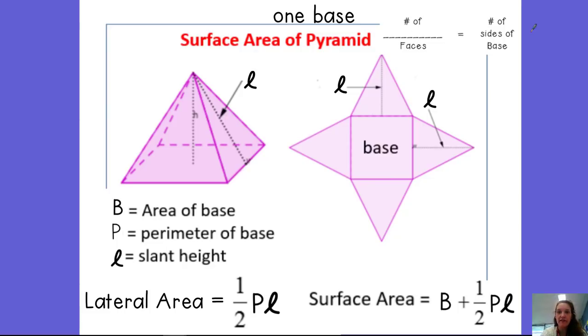So the number of lateral faces is equal to the number of sides of the base. So if your base has four sides, then you're going to have four of these triangles that make up your lateral faces. If your base has five sides, if it's a pentagon, it's going to have those five triangles coming off of it.